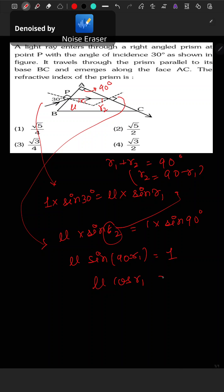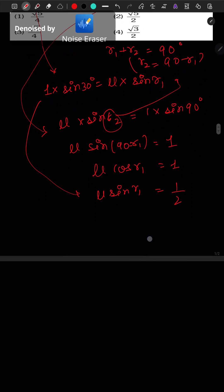And from earlier, mu sin r1 equals 1/2. These are equation 1 and equation 2. Squaring both equations and adding them, we get mu² (sin² r1 + cos² r1) = 1 + 1/4.